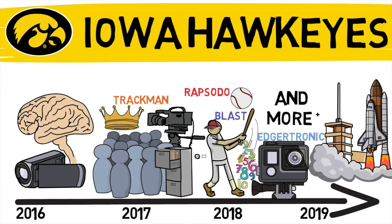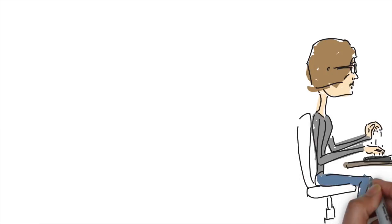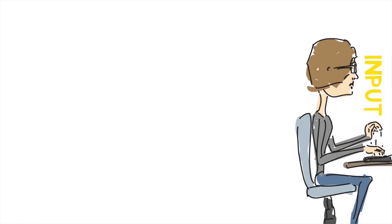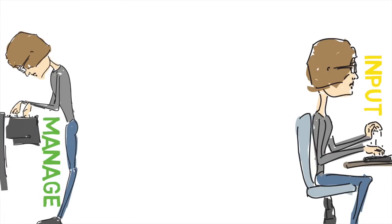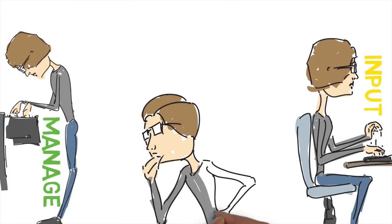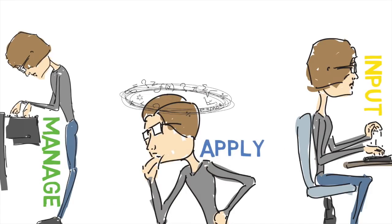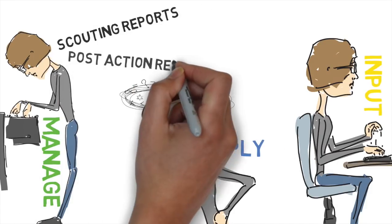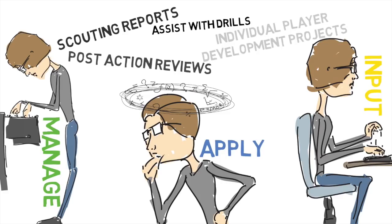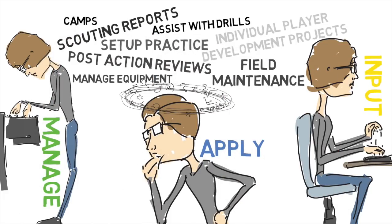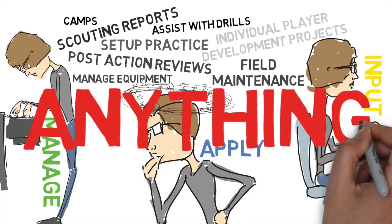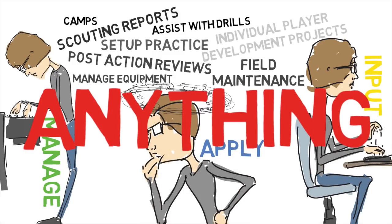As a student manager — and there are actually 13 other student managers — our role is to collect the data, manage the databases that we've created, and find ways to interpret and apply this data to help out our coaching staff in player development roles. We also do a whole lot of other things including working at camps, creating scouting reports. Really, when it comes down to it, we've done just about anything that you can think of, just to continue looking into the success that Iowa baseball has had.